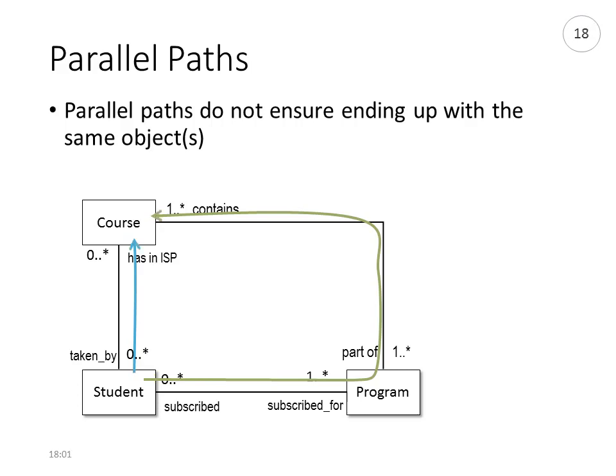The same holds in the other direction. Navigating from student to course via the blue path gives you all the courses a student has chosen to be part of their program. Navigating along the green path, for a student you find all their programs and then all the courses belonging to all those programs. The blue path gives a limited set of courses, whereas the green path gives a potentially very large set. In general, when you have two paths to navigate from one class to another, the sets of objects you will find will be different.